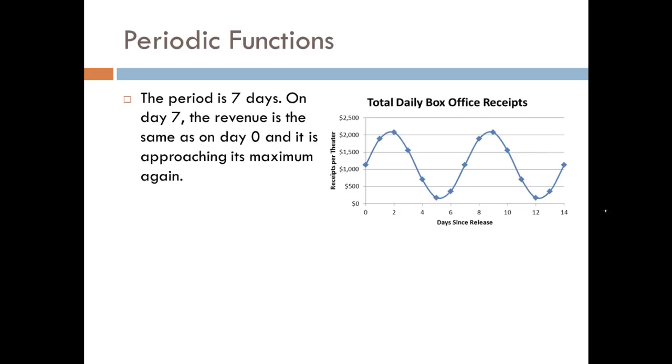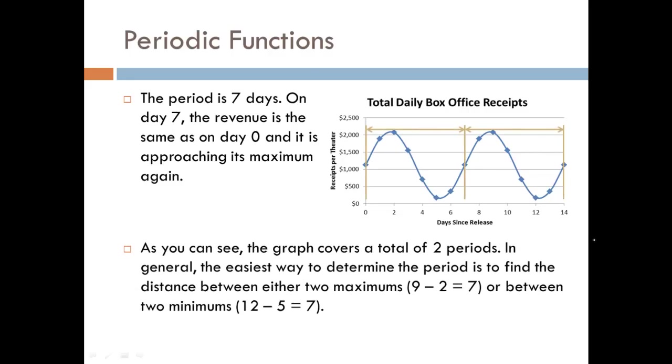If we look at the graph, the revenue on the initial day, zero, is roughly the same as it was on the seventh day, and again on the fourteenth day. In each of these cases, the revenue is increasing as you go into the weekend. We can see on the graph that over the fourteen days, it covers two periods. Each period is seven days long.